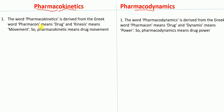Pharmacon means drug, whereas kinesis means movement. The word pharmacokinetics is derived from the Greek word pharmacon, which means drug, and kinesis, which means movement. So pharmacokinetics means drug movement.